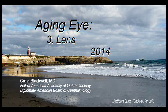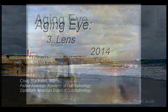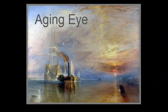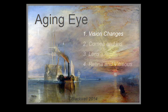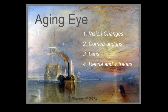This video about the lens is number three in our series about the aging eye. In the first video we talked about vision changes in some detail. In the second we talked about changes in the cornea and iris. In this video we are going to concentrate on the lens, the structure which has the most effect on vision as we age.